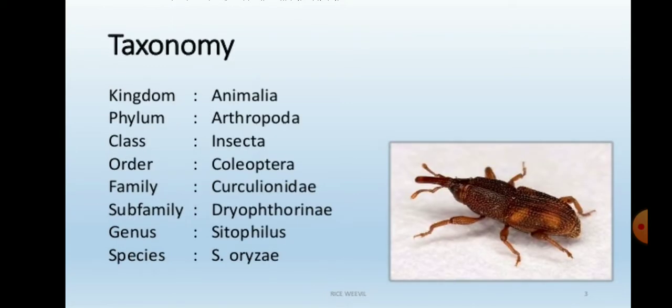The taxonomy of the rice weevil: Kingdom Animalia, Phylum Arthropoda, Class Insecta, Order Coleoptera, Family Curculionidae, Sub-family Diophthorinae, Genus Sitophilus, and Species Sitophilus oryzae. This taxonomic structure represents the full classification of the rice weevil.